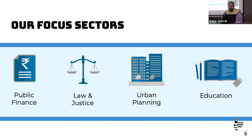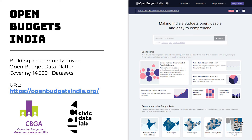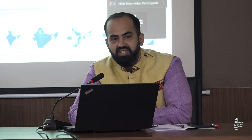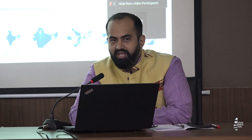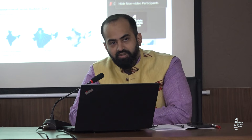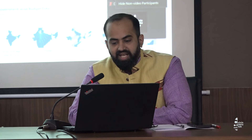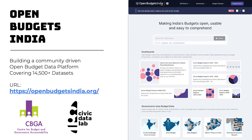Our focus sectors are four key areas: public finance, law and justice, urban planning, and education. In all of these sectors, we have built open data platforms which release data in machine-readable format for you to access and work with. One such platform, especially useful in this ongoing budget season, is OpenBudget India. It now has more than 16,000 datasets available in the public domain — downloadable from national government, state governments, municipal corporations, etc. As soon as a state government announces their budget speech in the parliament, the dataset comes here in machine-readable format.